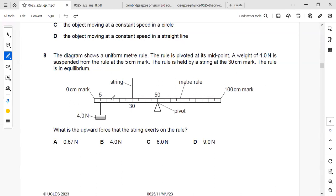Hi everyone, our next question is: the diagram shows a uniform meter rule. The rule is pivoted at its midpoint. A weight of 4 Newton is suspended from the rule at the 5 centimeter mark. The rule is held by a string at the 30 centimeter mark. The rule is in equilibrium. What is the upward force that the string exerts on the rule?